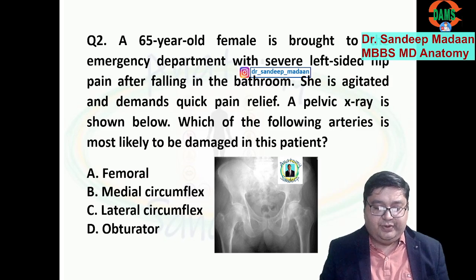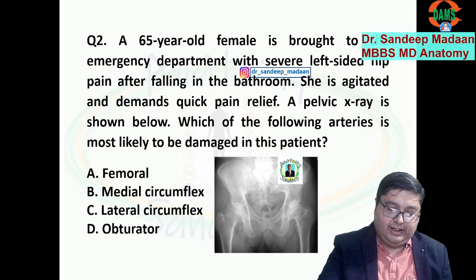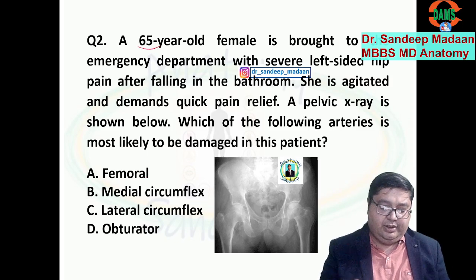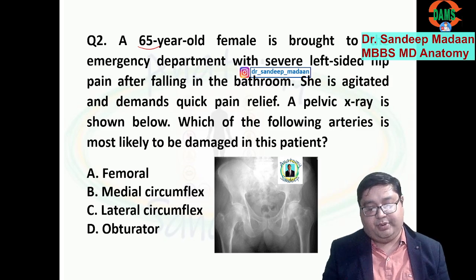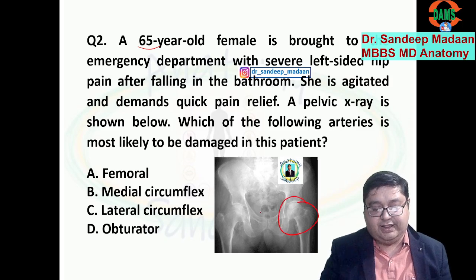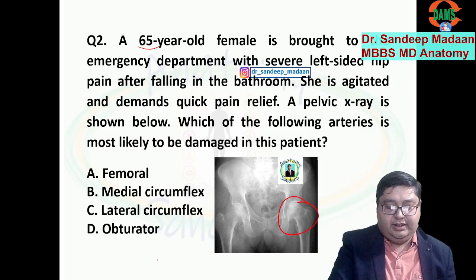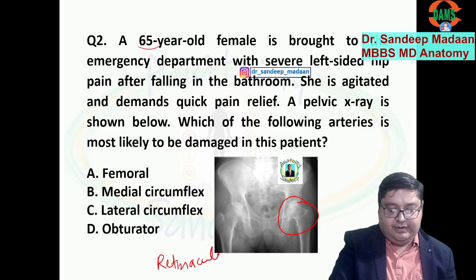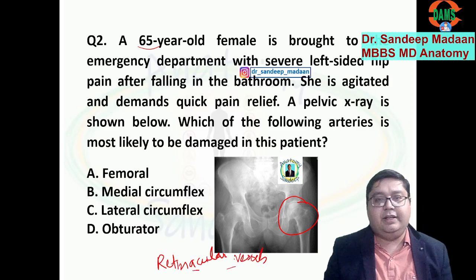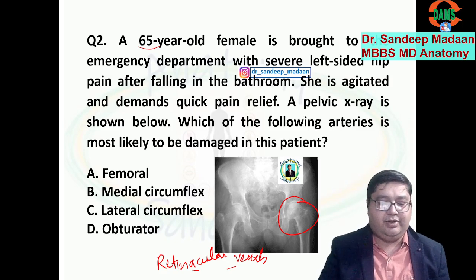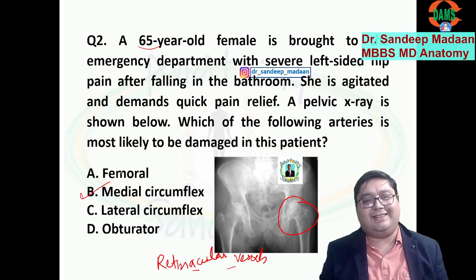Next question: there is a history of fall in an elderly patient. We suspect a fracture of neck of femur, and one X-ray confirms it. This part is supplied by retinacular vessels, which are contributed by two arteries — medial circumflex femoral and lateral circumflex femoral. But who is the dominant one? Medial circumflex femoral. B is the answer.